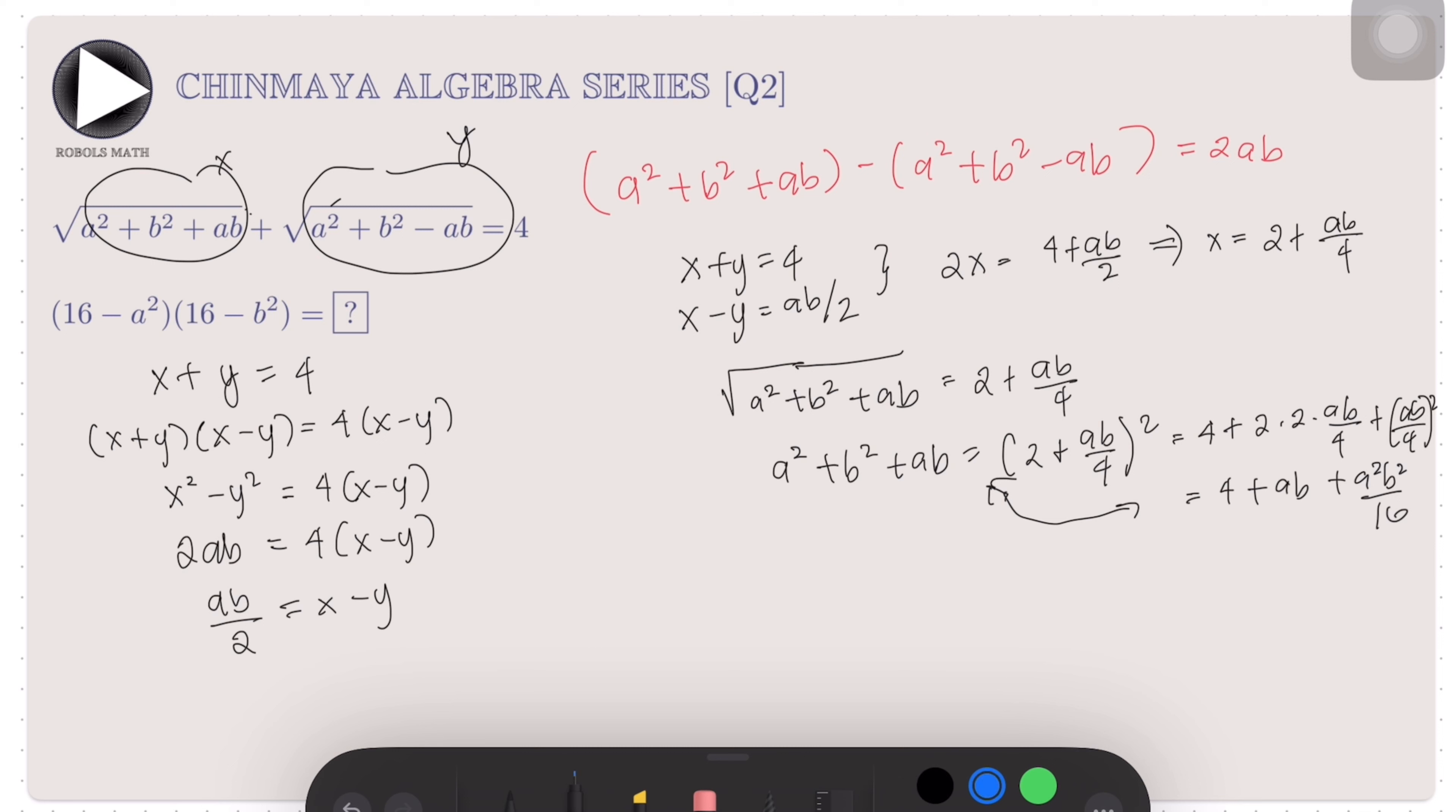We can cancel out this ab here because it's common and then rewrite the equation to simplify the left side. We get -4 = (a²b²/16) - a² - b².